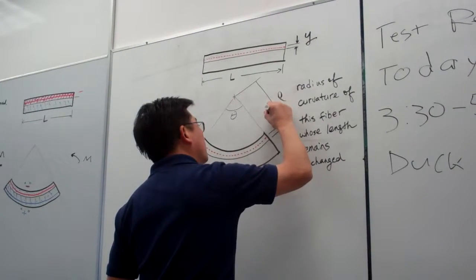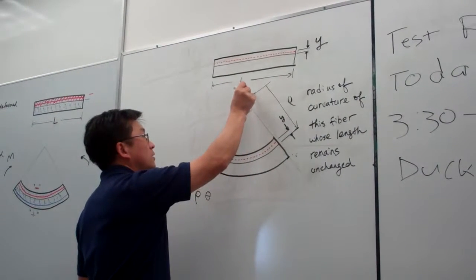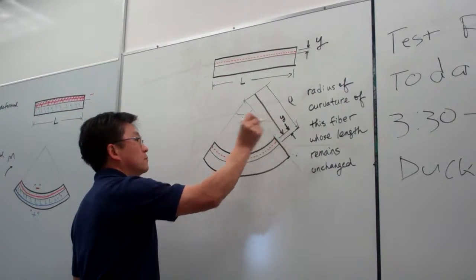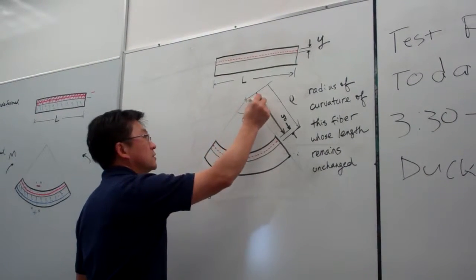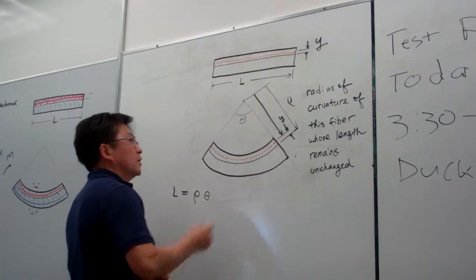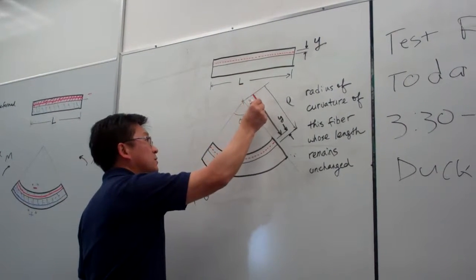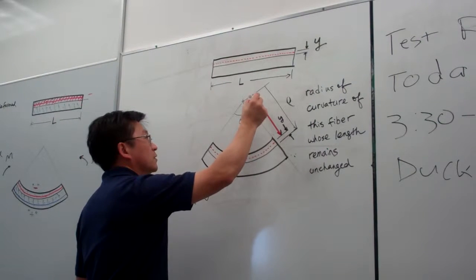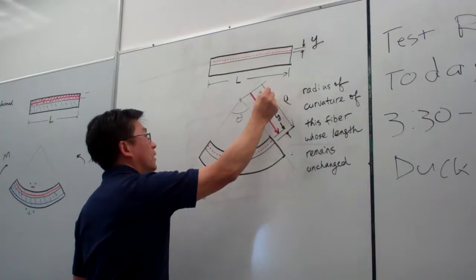So this distance here — from the center to here — is the radius of curvature, which is σ minus y. And y is measured from the neutral axis.